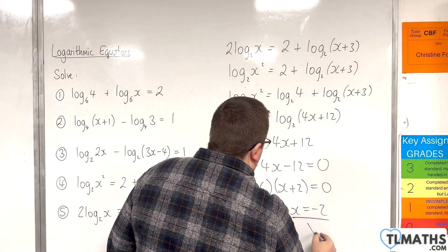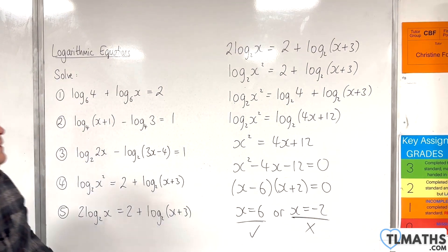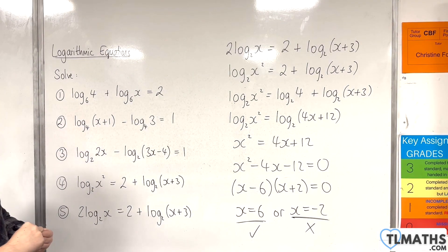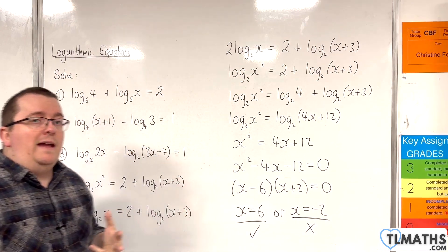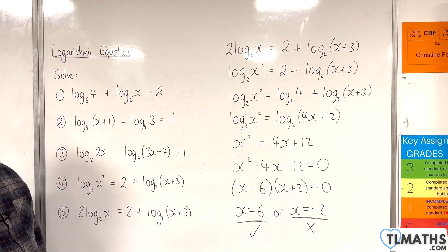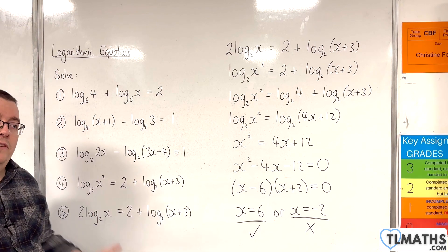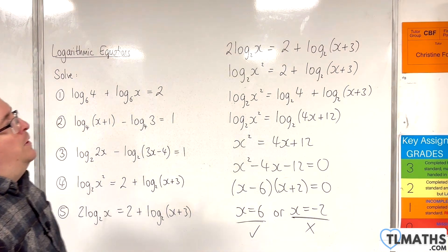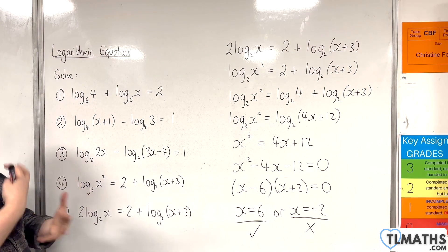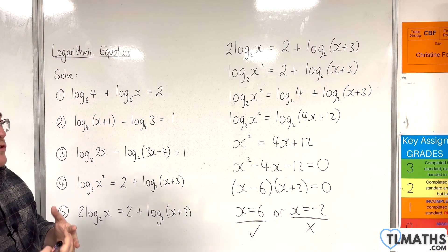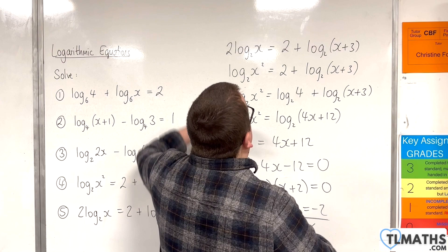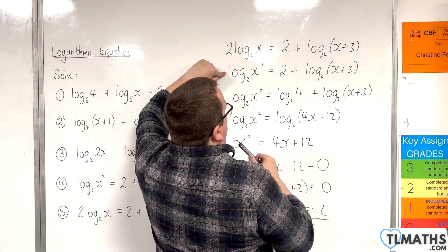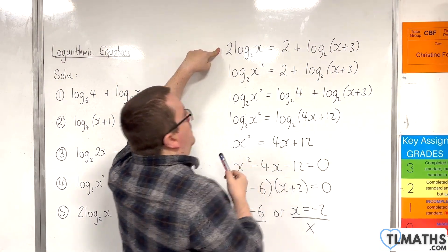That is weird, because if you start with this equation, the very nature of bringing that 2 up to the power and squaring the x actually introduces a solution that is wrong — one that doesn't solve the original equation. So one of the steps is creating this extra solution that does not solve the original problem. Essentially, if you start with this equation it has two solutions, but if you start with the other one there is only one.